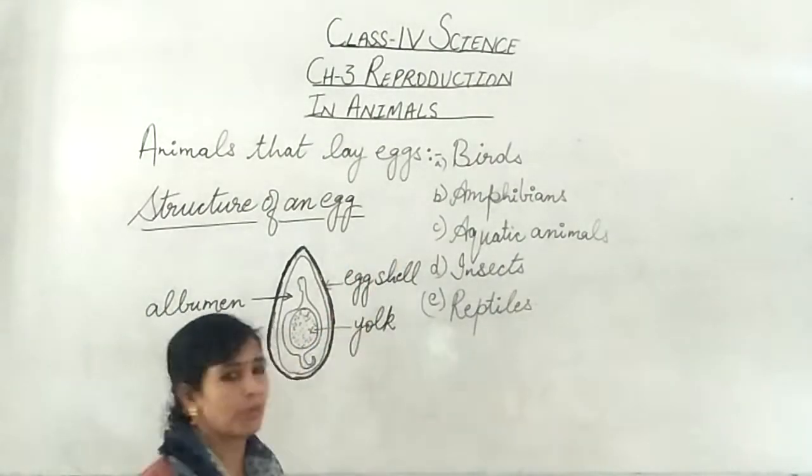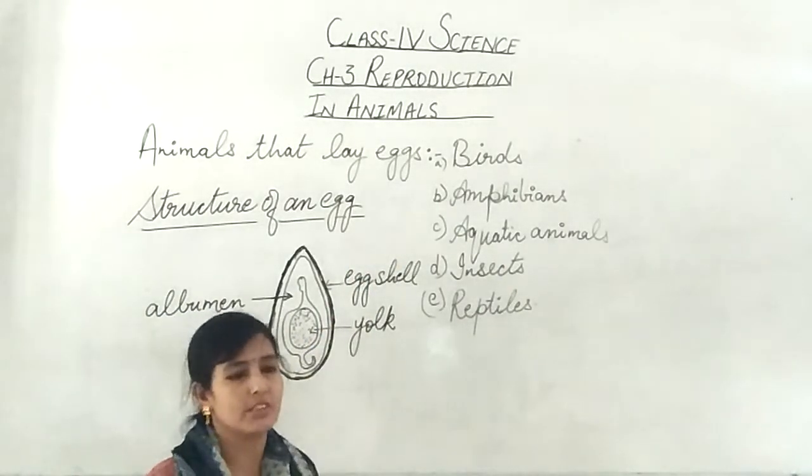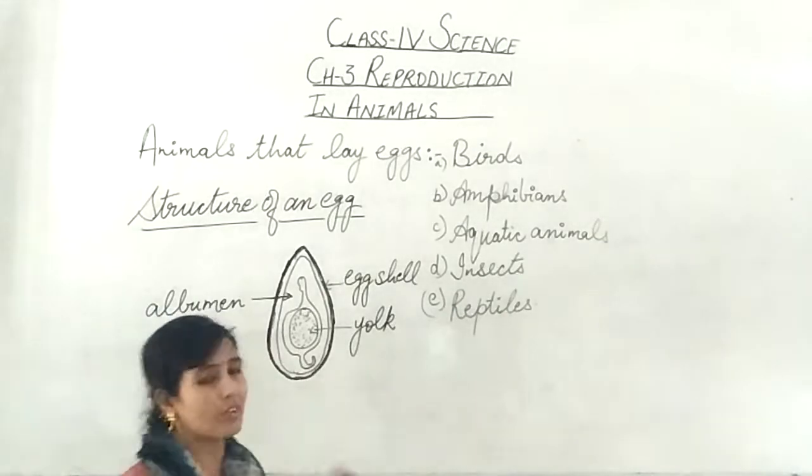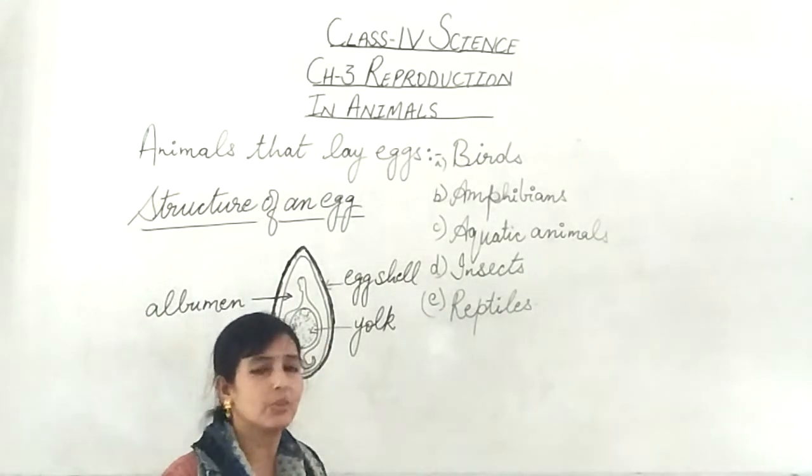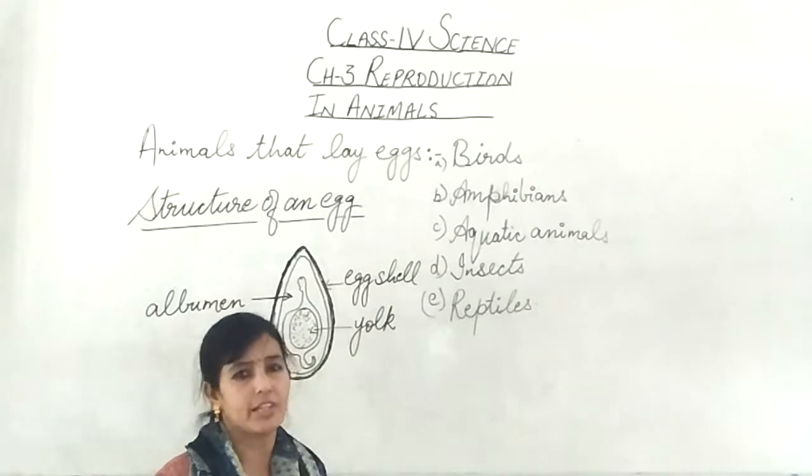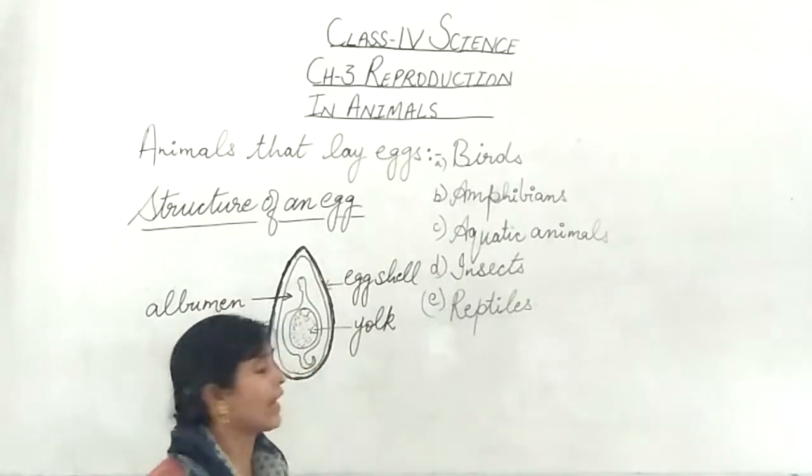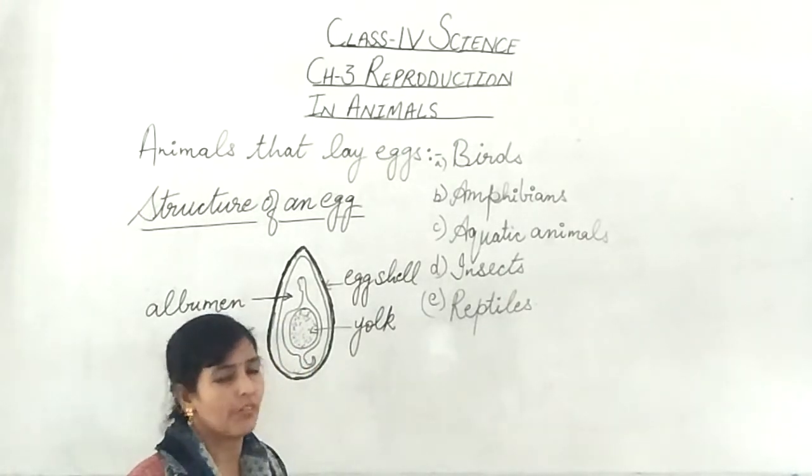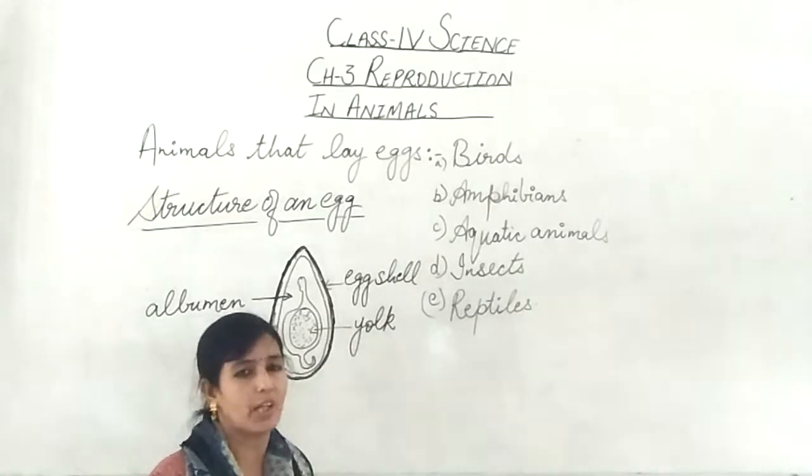Again, we are going to talk about aquatic animals. Aquatic animals, we can say a simple example, there is fish. Fish lay thousands of eggs. But only hundreds of eggs survive because most of the eggs are eaten by the big fishes. Only hundreds of eggs can survive.